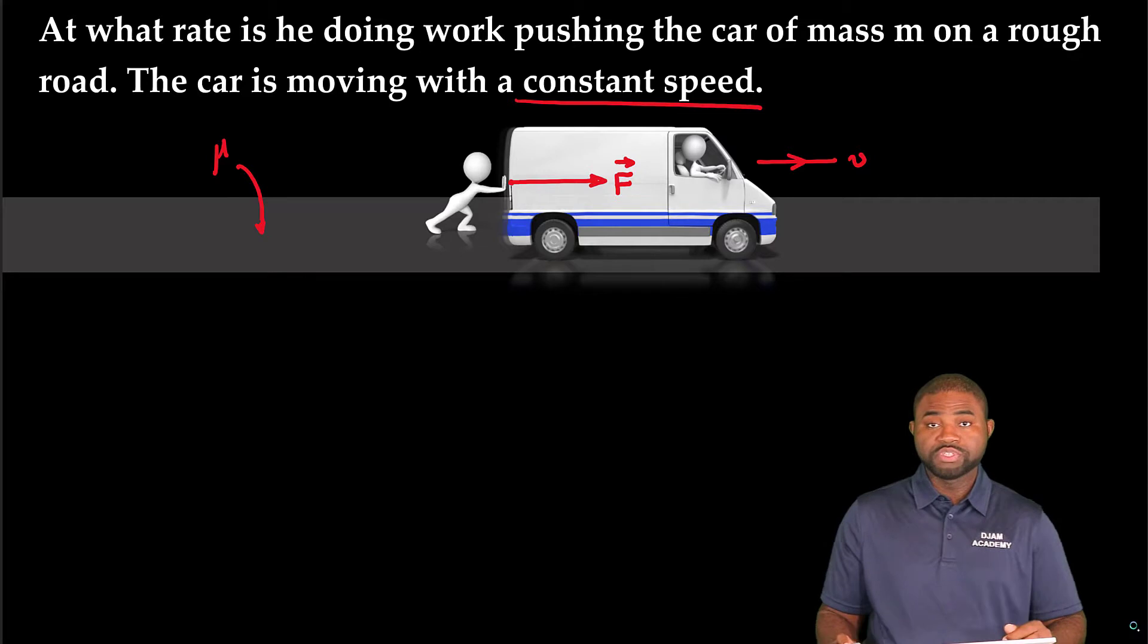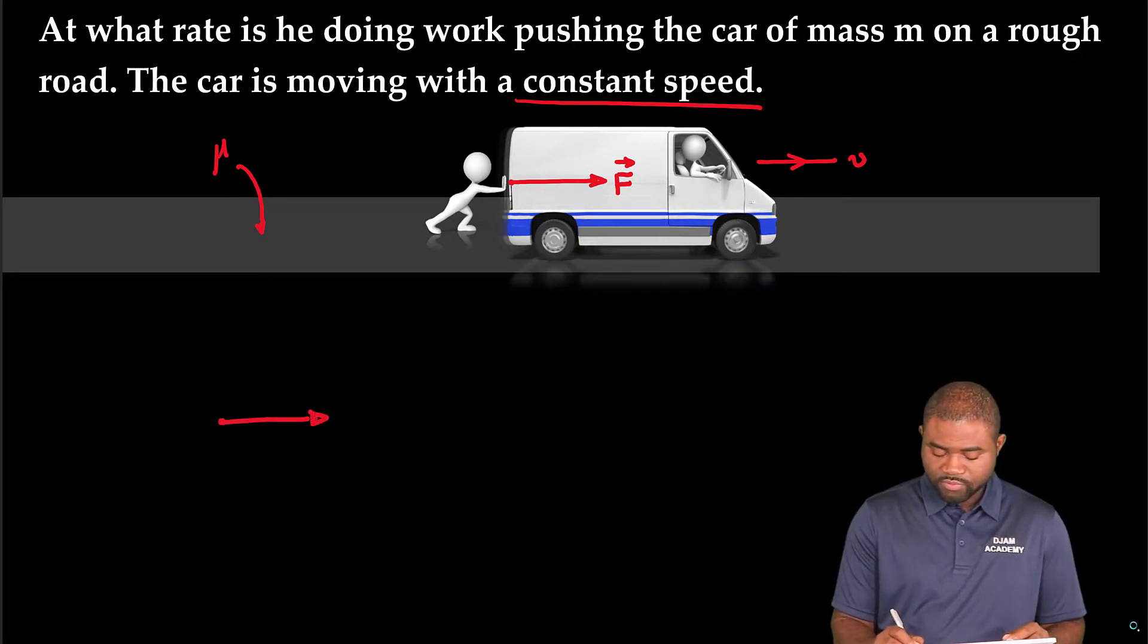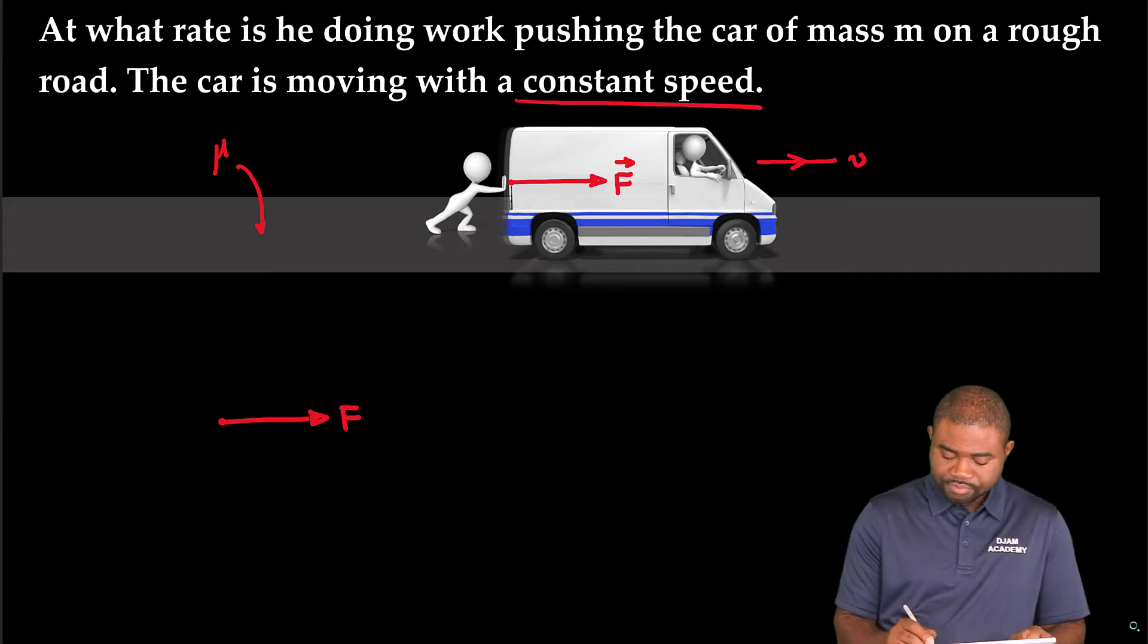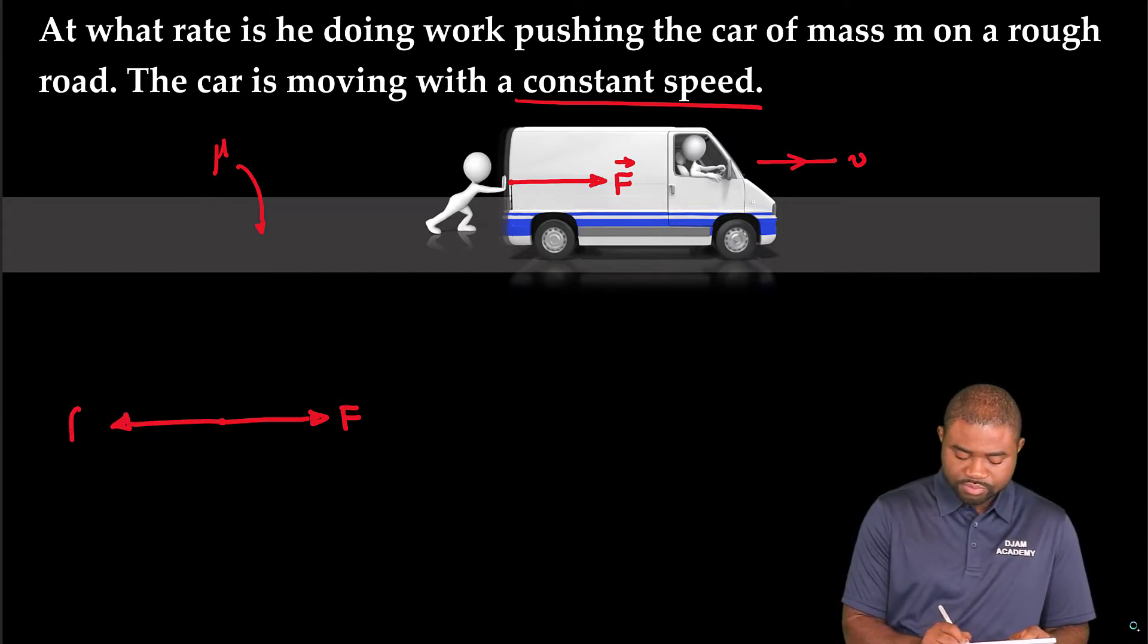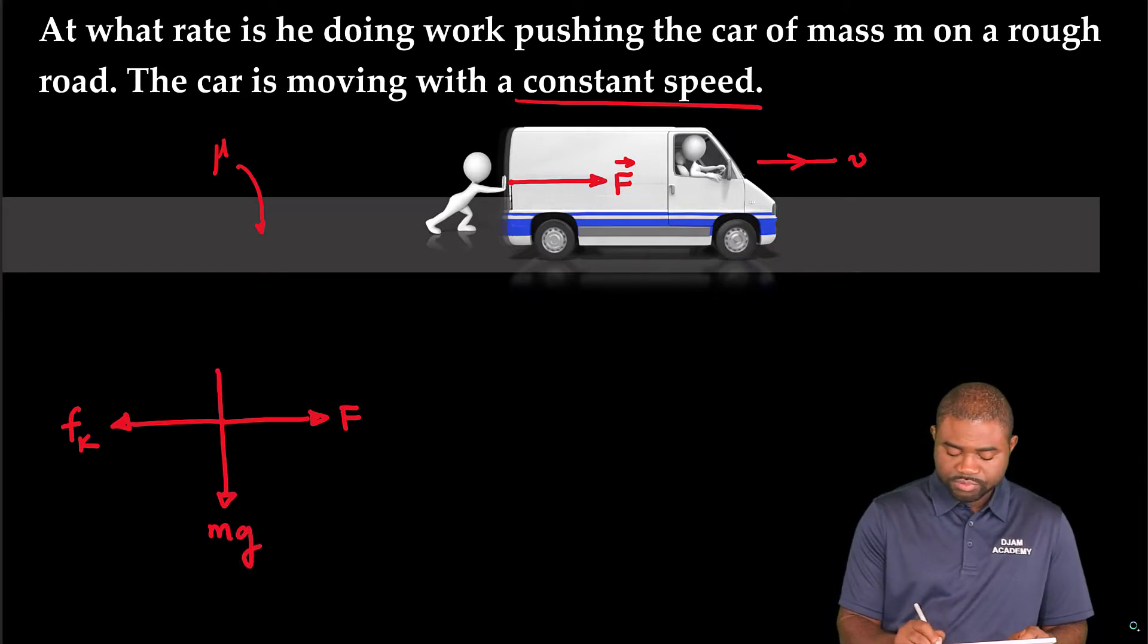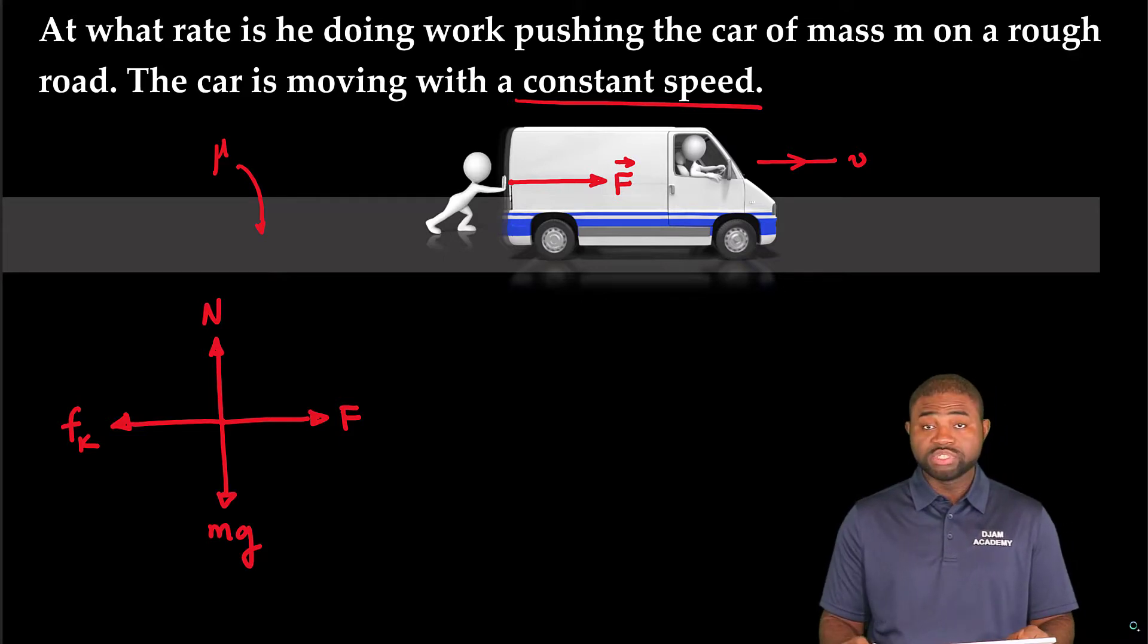So let's start first by doing a free body diagram. We have the force, the pushing force acting to the right. You have the force of friction acting backwards. This is kinetic friction. The weight of the car acting vertically downwards, and the normal force acting vertically upwards.